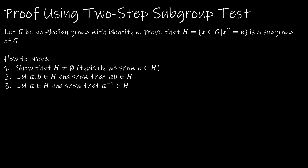We now prove the same statement using the two-step subgroup test. First, we check non-empty: since e² = e, e is an element of H, so H is not the empty set. Notice I'm writing in sentences — even though I'm not using a ton of words, make sure your reader can follow your train of thought.